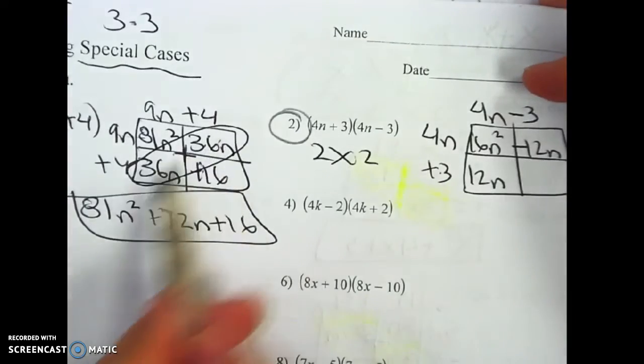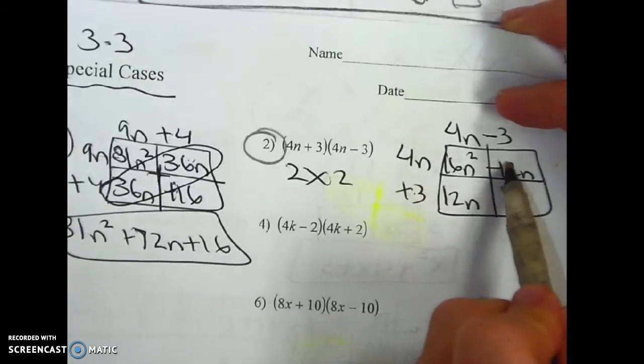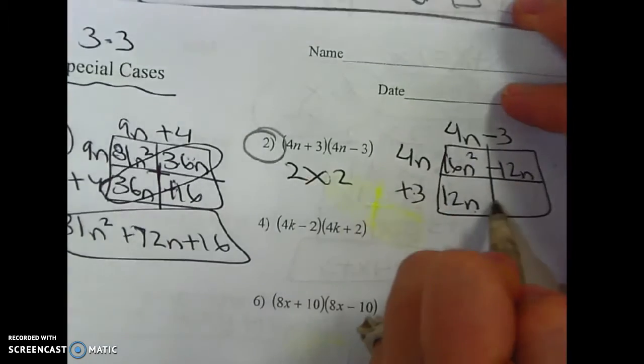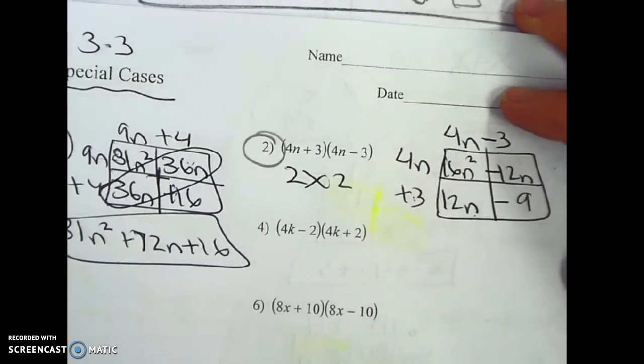So you'll notice in this one, these are exactly the same. But here, they're actually opposite. And 3 times negative 3, don't subtract. It's 9.